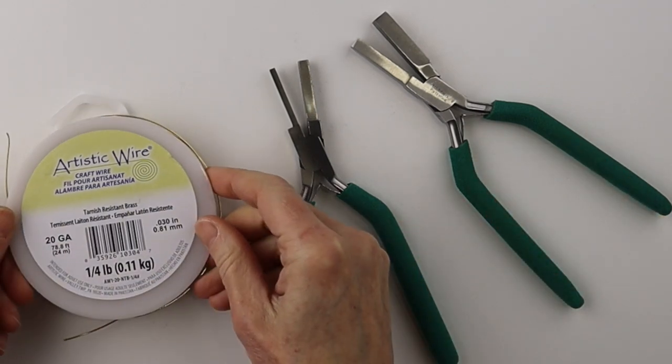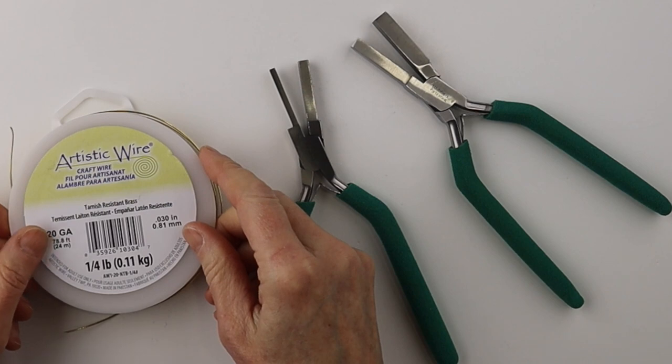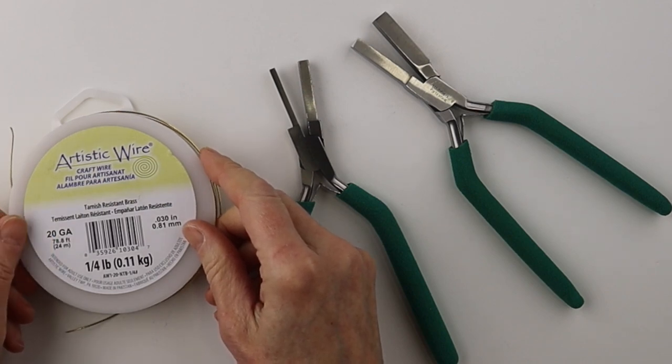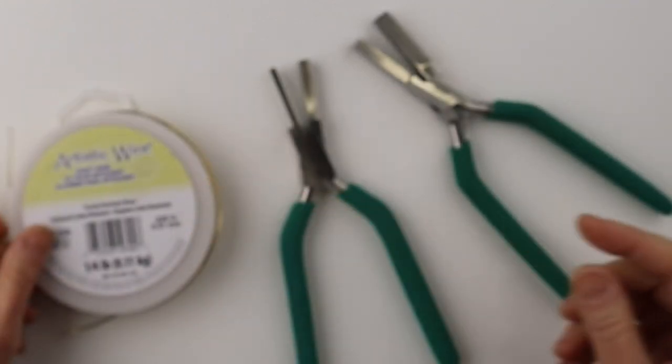For the samples I'm going to use 20 gauge tarnish resistant brass. You can use any 20 gauge half hard wire that is hypoallergenic. I also like to use Argentium silver for my ear wires.